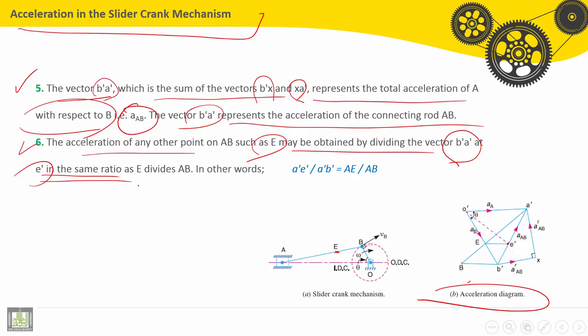In step six, before the final step, the acceleration of any other point on A-B, such as E here located on the connecting rod, may be obtained by dividing the vector B-A-dash at E-dash, in the same ratio as E divides A-B.